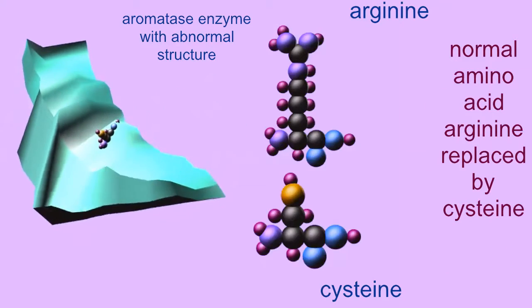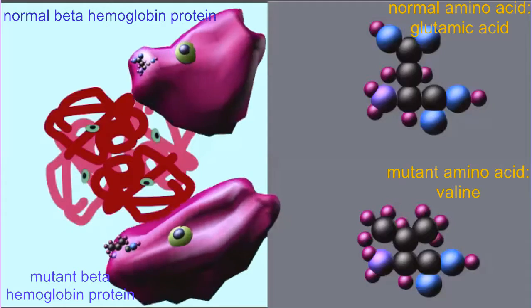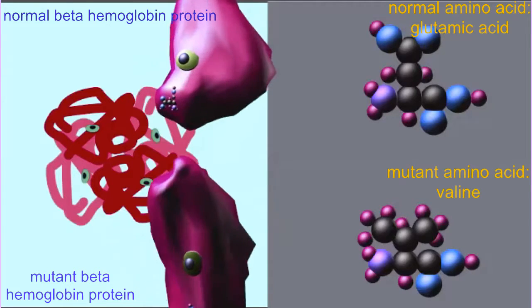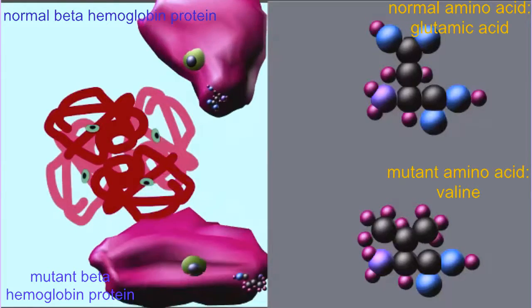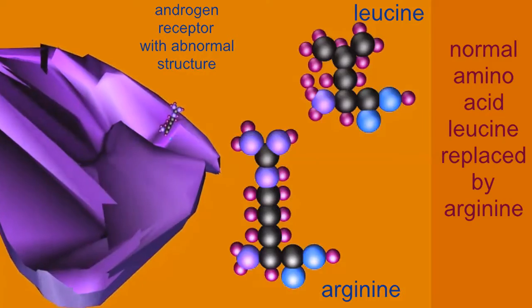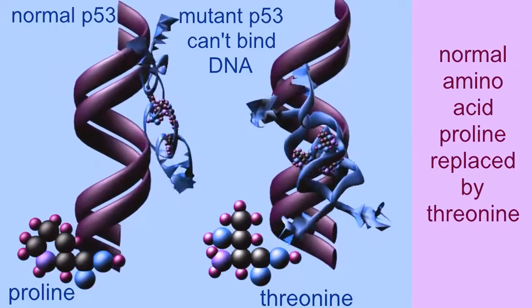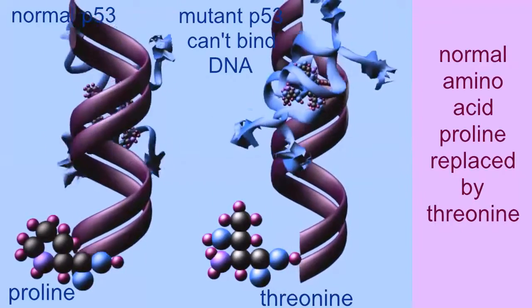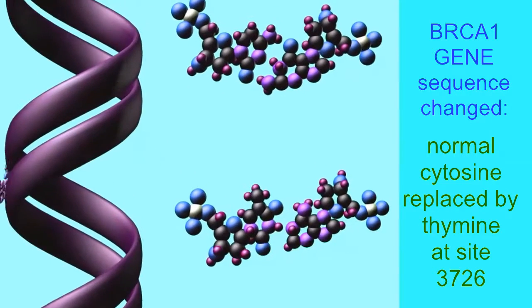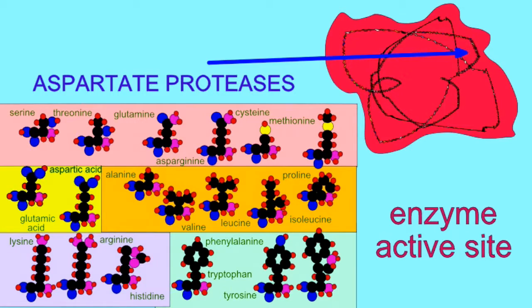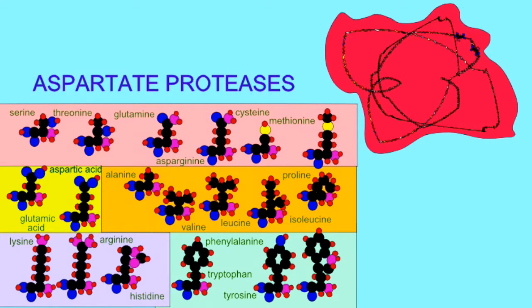Missense mutations convert a codon which codes for one amino acid to a codon which codes for a different amino acid. The severity of a missense mutation would depend on how important this spot in the protein was. For example, the active site of an enzyme would be an area where missense mutations would be likely to affect phenotype.